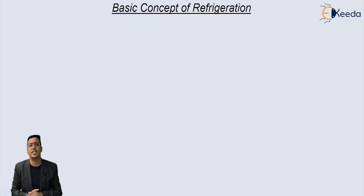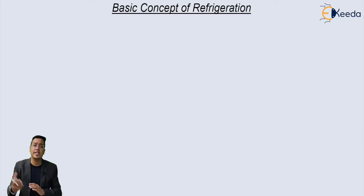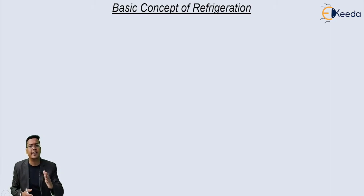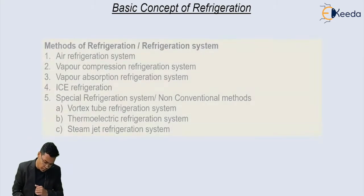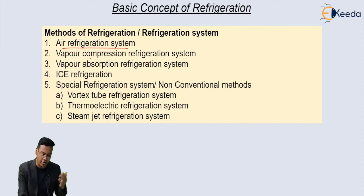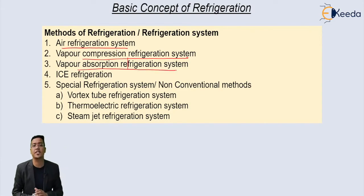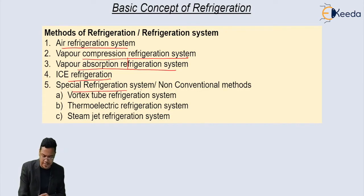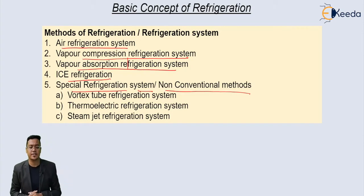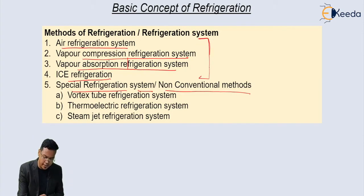There are different methods of refrigeration systems. Here we see the list of methods: air refrigeration system, vapor compression refrigeration system, vapor absorption refrigeration system, ice refrigeration system, and special or non-conventional methods. The first ones are the conventional methods and the latter are the non-conventional ones.